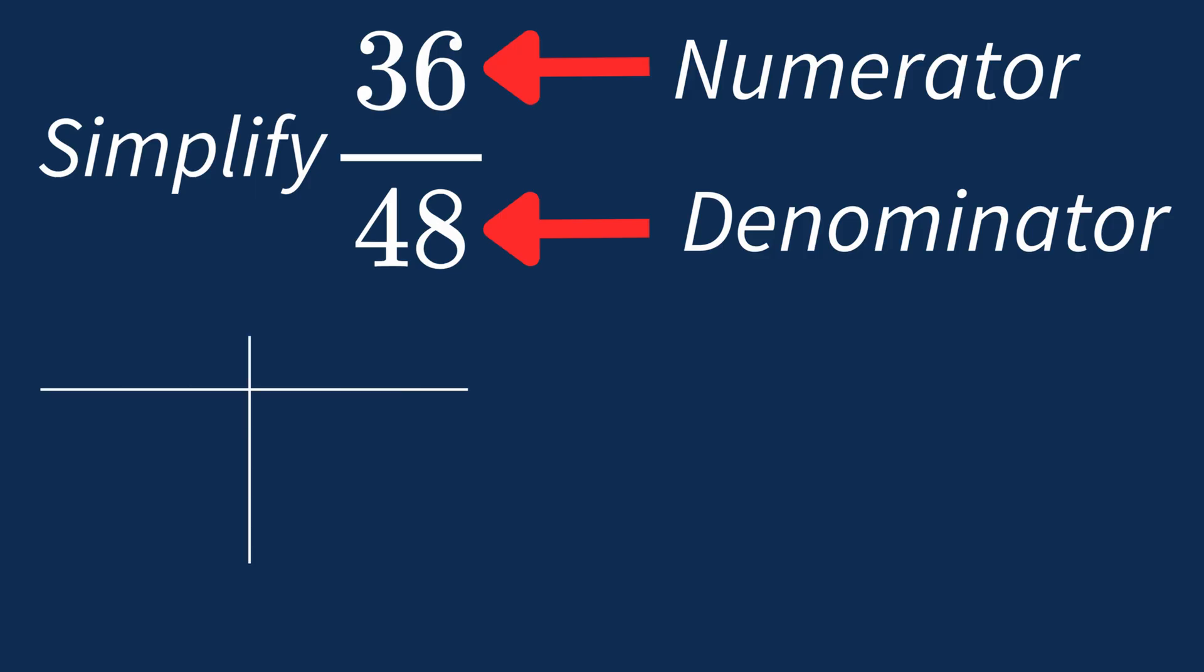First, let's list out the factors for each. For 36, the factors are 1, 2, 3, 4, 6, 9, 12, 18, and 36.